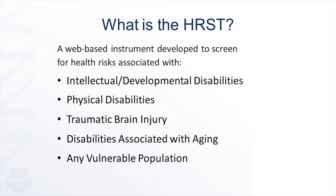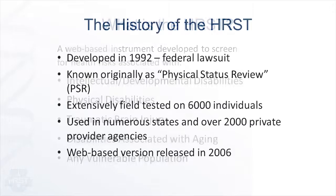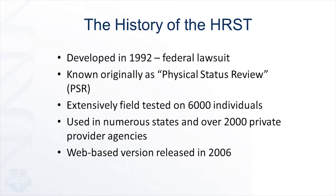The main purpose of the tool is to detect risk and signs of destabilization early so that preventative action can be taken to improve quality of life as well as avert preventable, unnecessary deaths. The HRST, originally known as the Physical Status Review, was developed in 1992 in the state of Oklahoma by Karen Green McGowan, a registered nurse who now has over 50 years of direct experience with both adults and children with intellectual and developmental disabilities. Its purpose was to ensure that those transitioning from a large institutional setting to the community would not suffer from undetected health risk and destabilization.